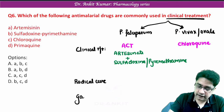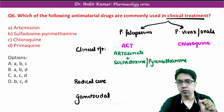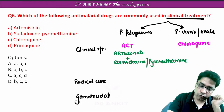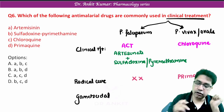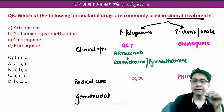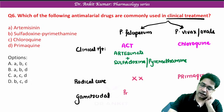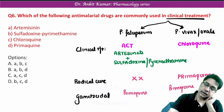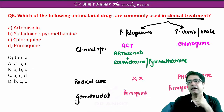Now let's understand radical cure and gametocidal drug. Radical cure means we have to kill the stage of plasmodia in the liver, so for radical cure we give primaquine. We don't have to give radical cure in cases of P. falciparum because P. falciparum does not have any latent stage in liver. As a gametocidal drug in all cases we give primaquine again. So primaquine is given in all types of malaria for radical cure and gametocidal, except clinical cure.